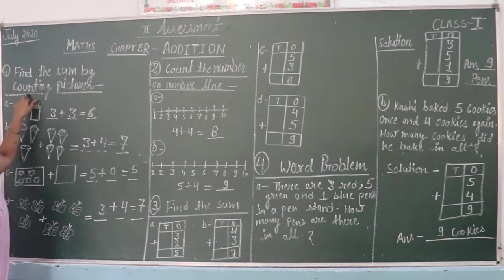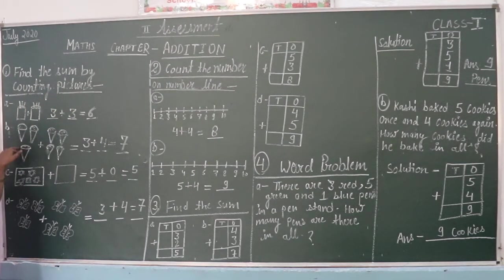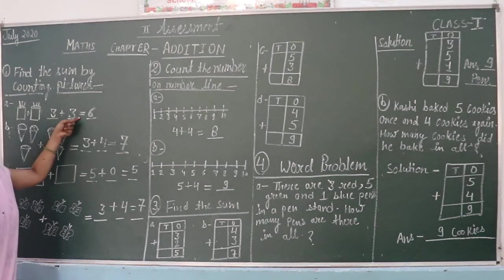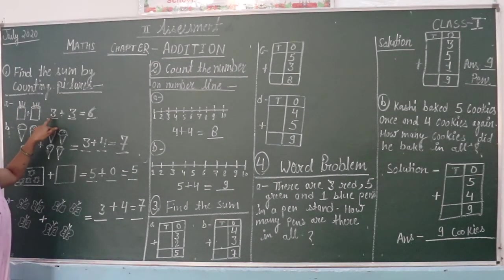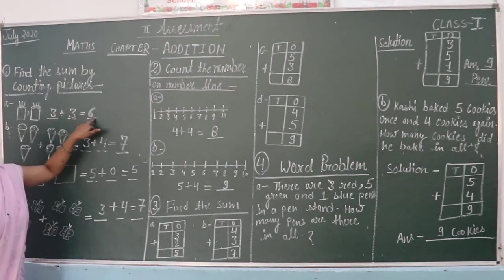Find the sum by counting pictures. You have to count the pictures. First picture is 3. Three points are 3. Counting 3 plus 3 is 6.